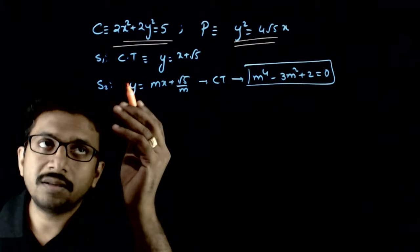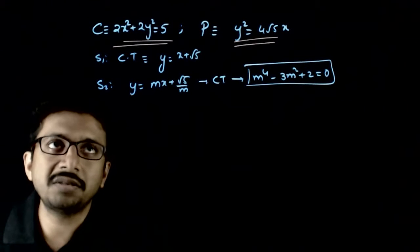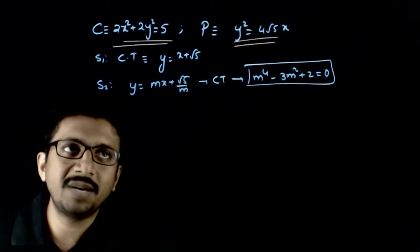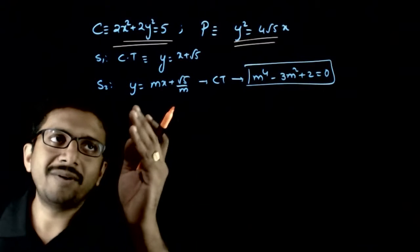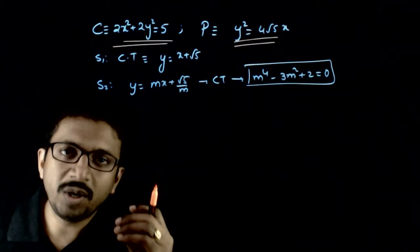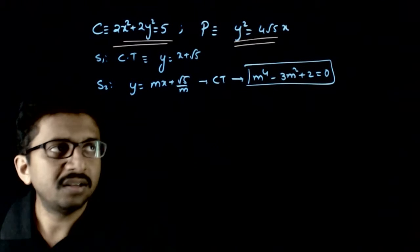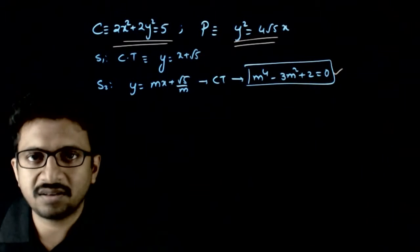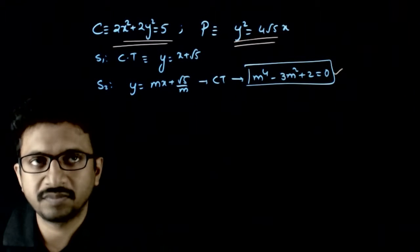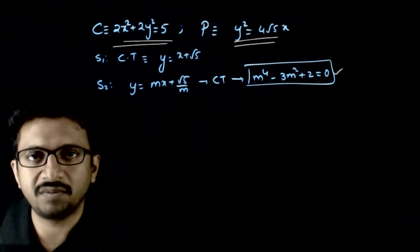The first statement is: y = x + √5 is a common tangent to these two curves. The second statement S2 is: y = mx + √5/m will be a common tangent to the circle and this parabola if m satisfies a certain equation.